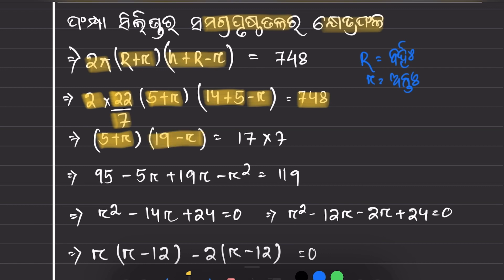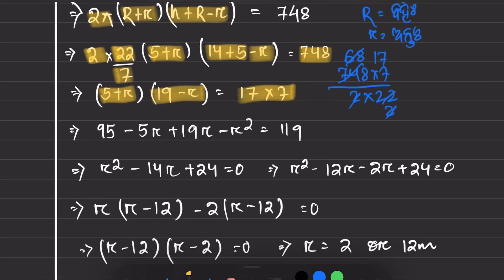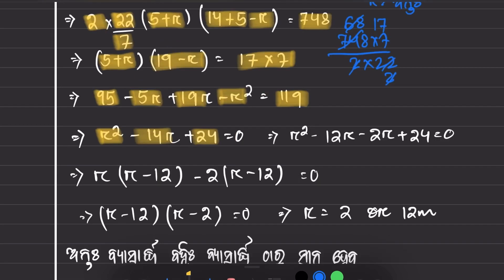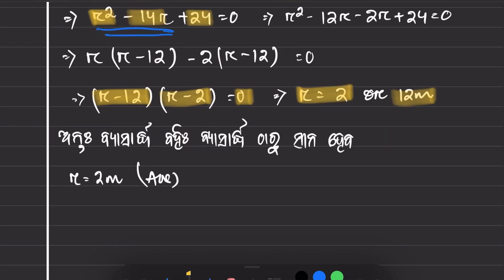Simplifying: (5 plus r) times 19 minus r equals 17 times 7. We calculate 748 times 7 divided by 2 times 22, which gives 119. Expanding: 95 minus 5r plus 19r minus r squared equals 119, so r squared minus 14r plus 24 equals 0. Factoring this quadratic: (r minus 12) times (r minus 2) equals 0, giving r equals 2 or r equals 12.